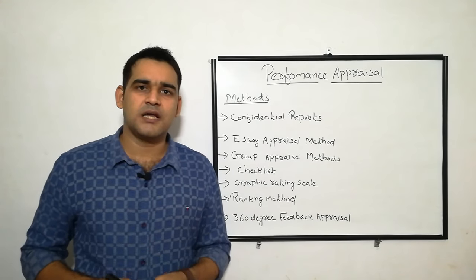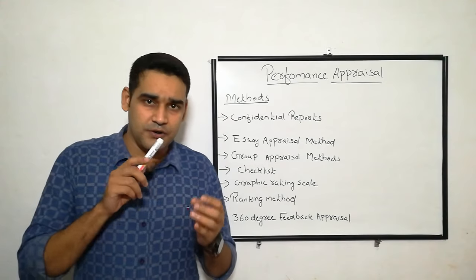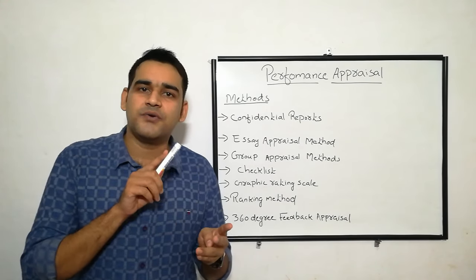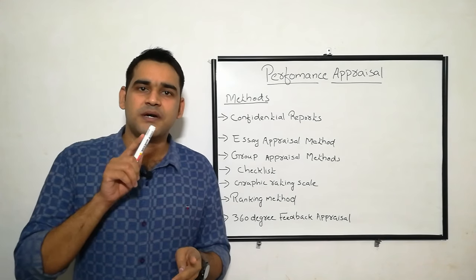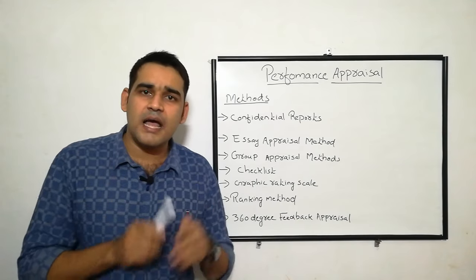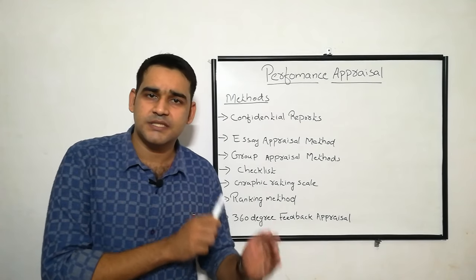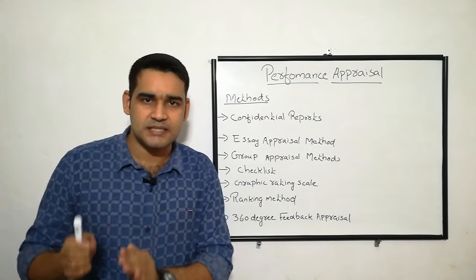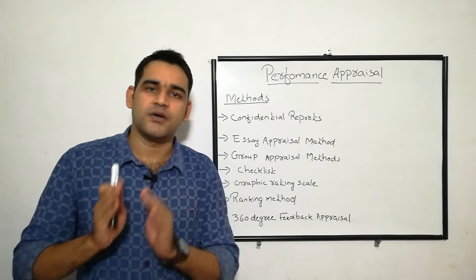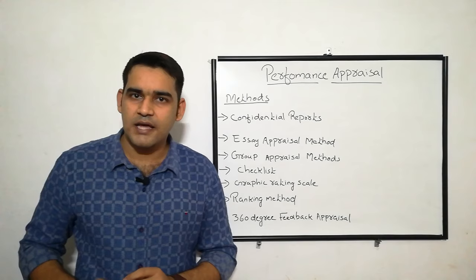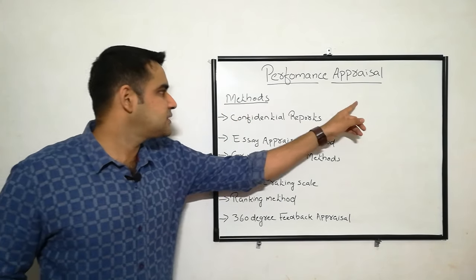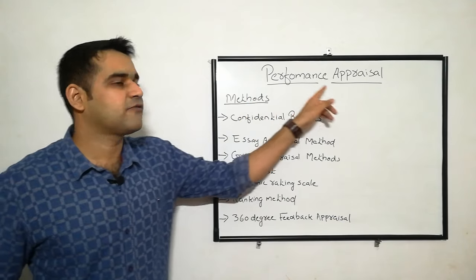So, five steps are there: first, establish the performance standards; second, communicate the standard; third, measure the actual performance; fourth, compare the actual performance with the standards and communicate the result; and last, take corrective action if required. Next, we can see the most important part of performance appraisal — that is the methods of performance appraisal.